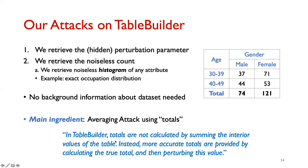According to Table Builder's documentation, totals are not calculated by summing the interior values of the table. Instead, more accurate totals are provided by calculating the true total and then perturbing that value. So the total is not obtained by adding the two noisy sub-totals — fresh noise is added to the actual true total.